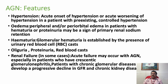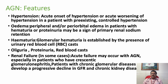In acute glomerulonephritis, whether infectious or due to any other cause, clinical findings are almost similar. On examination, patients have high blood pressure, pulmonary edema, and renal failure — these are classical findings. Edema can be present but is not like nephrotic syndrome, where every patient has massive proteinuria and massive albuminuria. Here proteinuria is very less, so there will be minimal facial and peripheral edema.